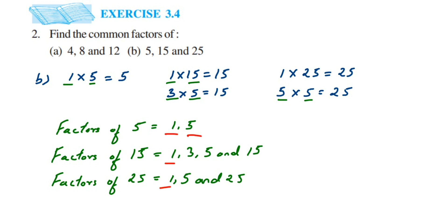The common factors are 1 — which is always common — and 5. So the common factors of 5, 15, and 25 are 1 and 5. This is how you find common factors: first find the factors of each given number, then identify which ones appear in all the lists. I hope this is clear — if you have any questions or doubts, drop a comment. Thank you for watching.